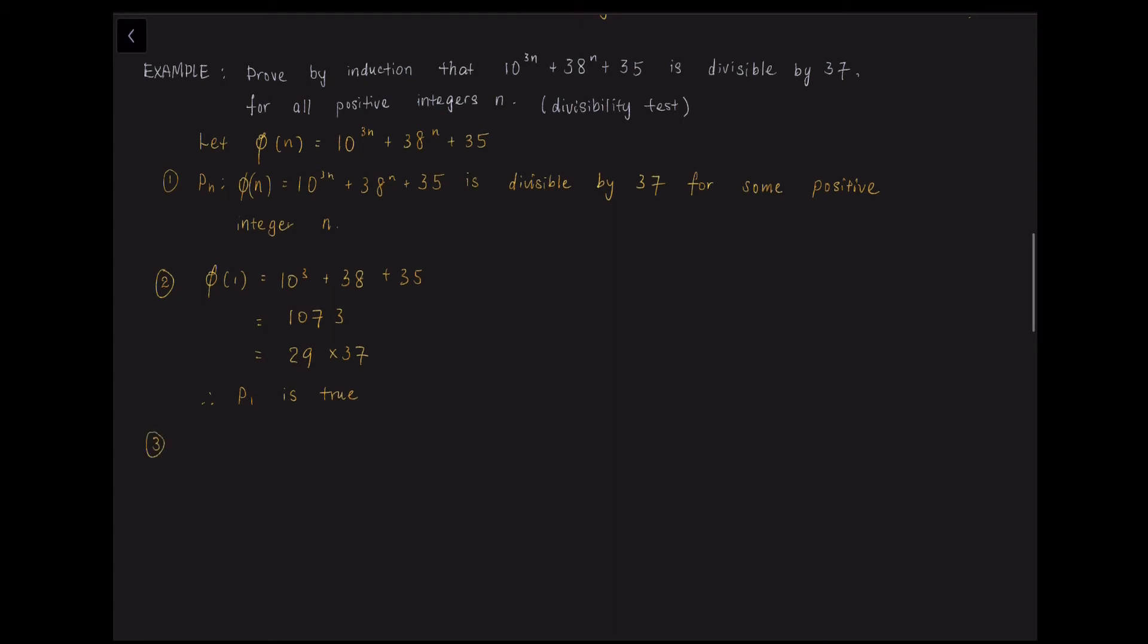And then we move on to the third step, which is assume P(K) is true. Now the fourth step, the most complicated one.